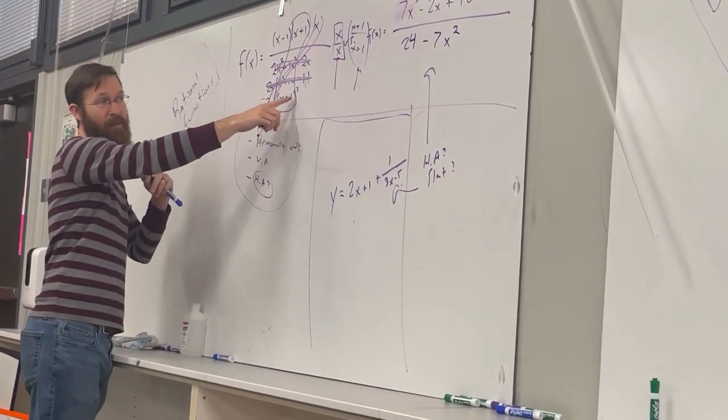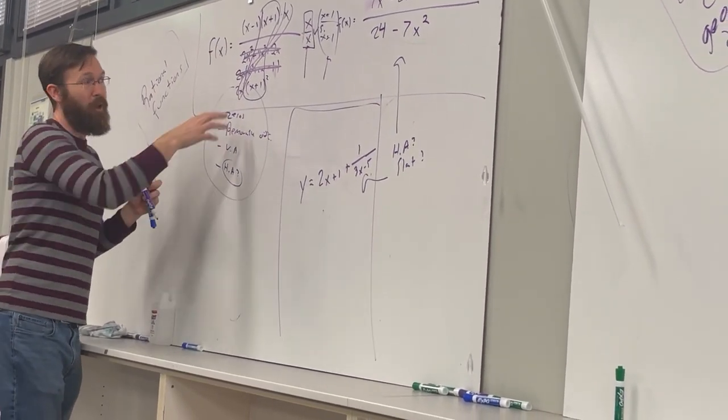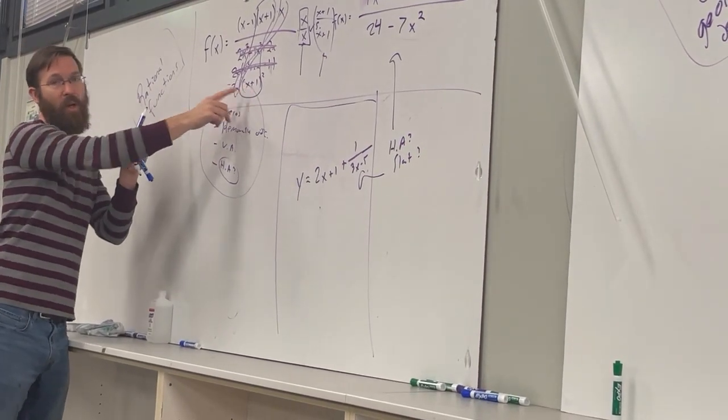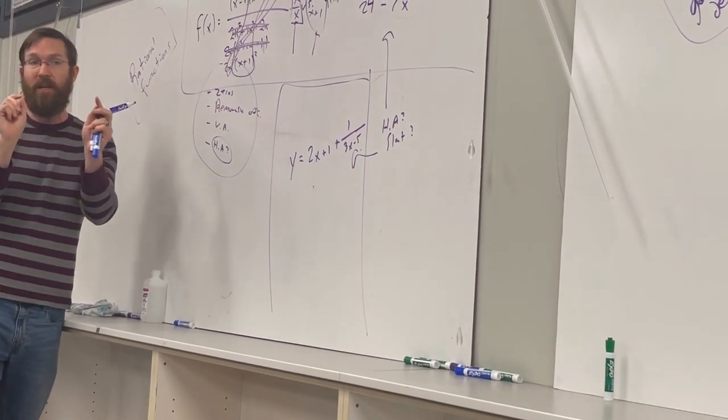But notice we have one x plus 1 left over in the denominator. So the ultimate test about what's happening at the value negative 1 is what would happen if you plugged in x values that were approaching the undefined value?